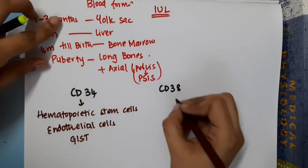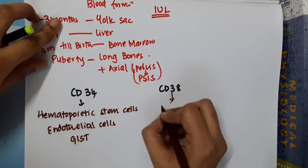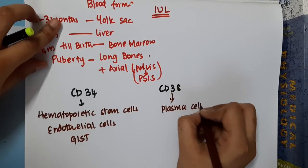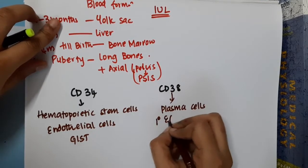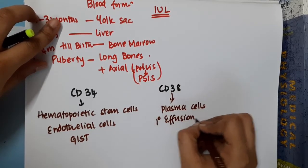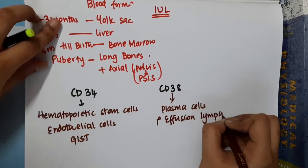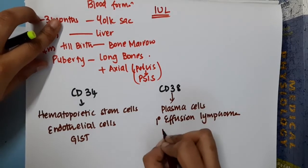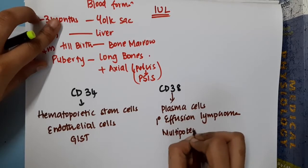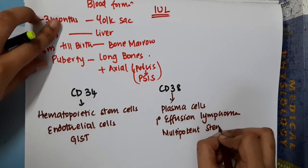CD38 is a marker of plasma cells. It is a marker of primary effusion lymphoma and multipotent stem cells.